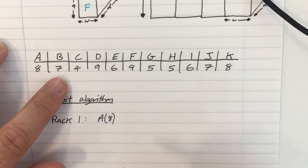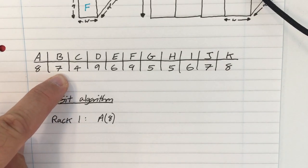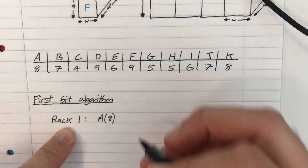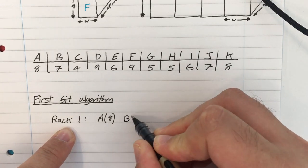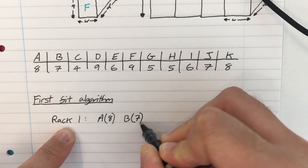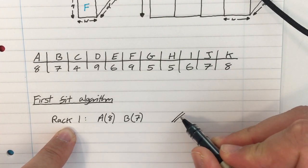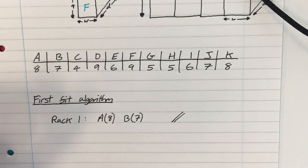Which means that rack 1 has 7 units of height left, because the racks all have a height of 15 available. I'm then going to pick up box B, which is 7 units high. And I'm going to test, well, does it fit in rack 1? Yes. So I'm going to put it in rack 1. That now makes 15, so that is now a full rack.